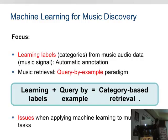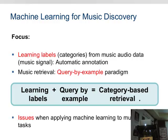There is another focus of the talk, which is the query by example paradigm. This is a very easy paradigm, very used in music discovery when you want to buy something in iTunes or when you want to search for music. Basically, you provide an example — you provide the signal which acts as an example — and there is a system, a black box for the user, that returns you items, music documents, that are similar in some respect to your example. These two things — learning labels or automatic annotation plus query by example — is what I call category-based retrieval.